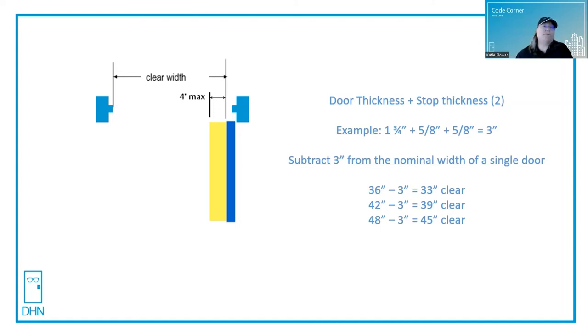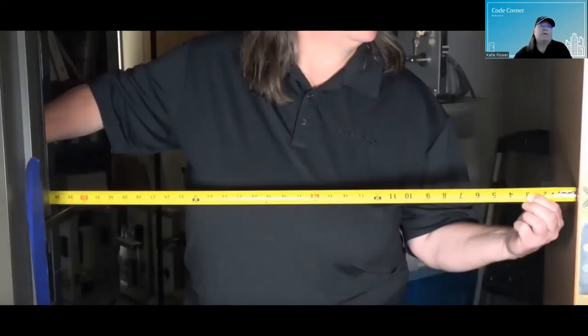For a pair of doors, all you have to do is double that. We can't always measure existing doors, but you can do the math and it's really simple. Just remember, subtract three from a single and six from a pair. That's going to get you close enough. Anything that's super close, then you may need to take into account things like a removable mullion. But let's take a look at what that looks like in real life.